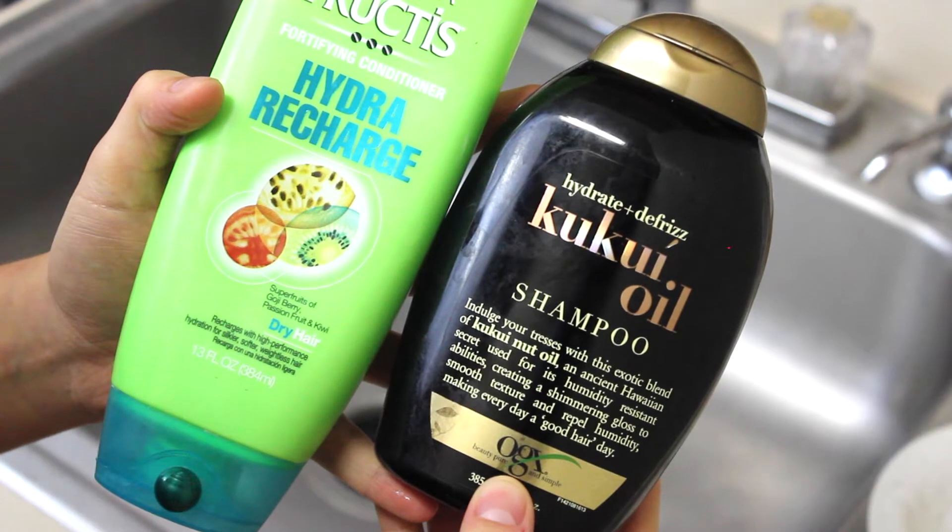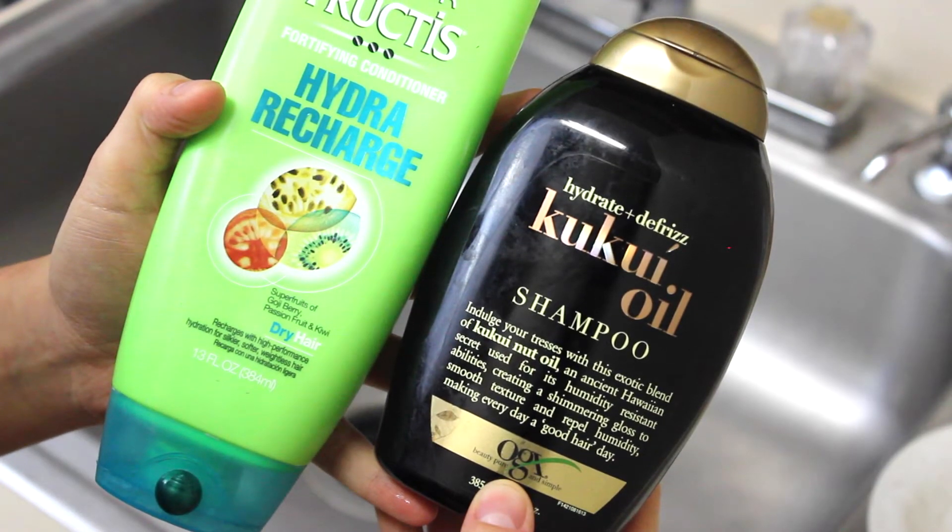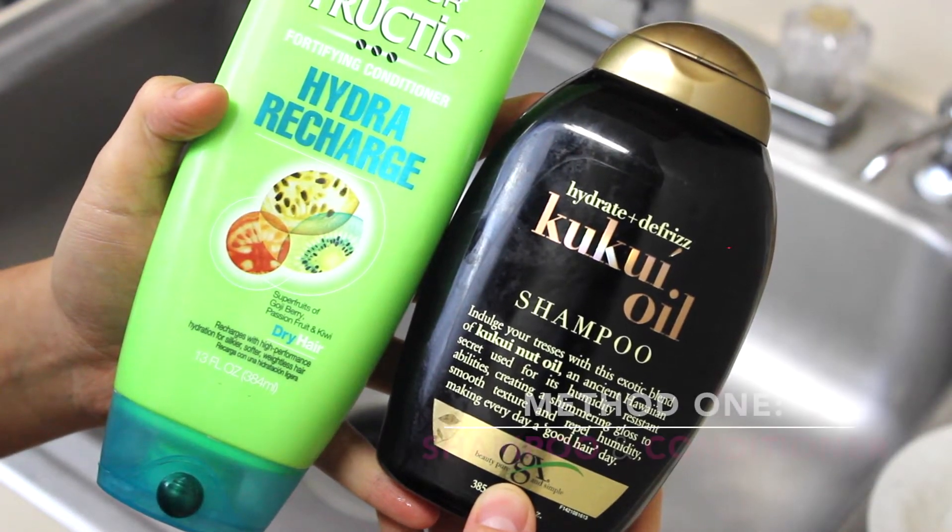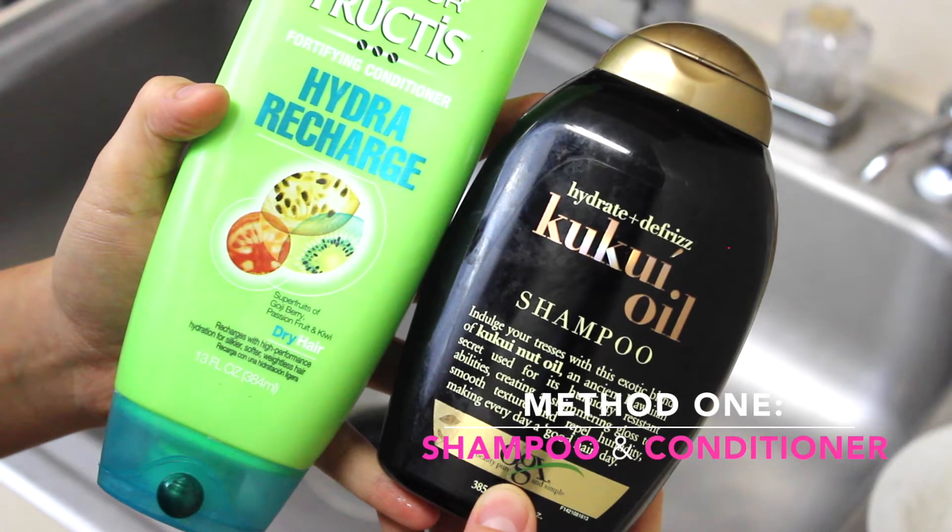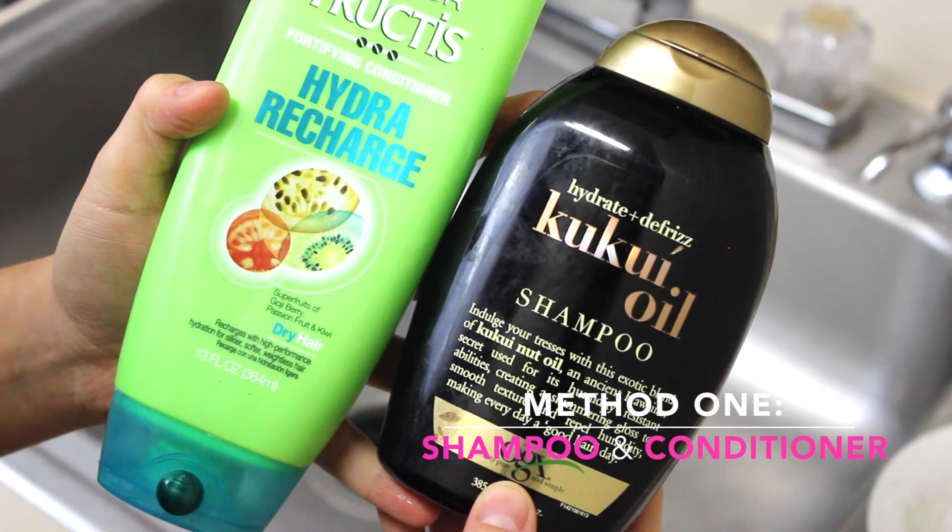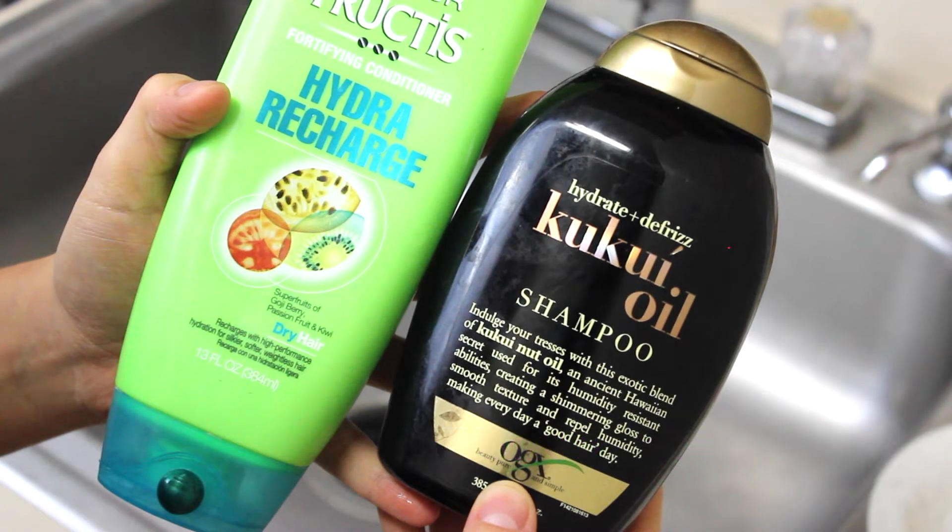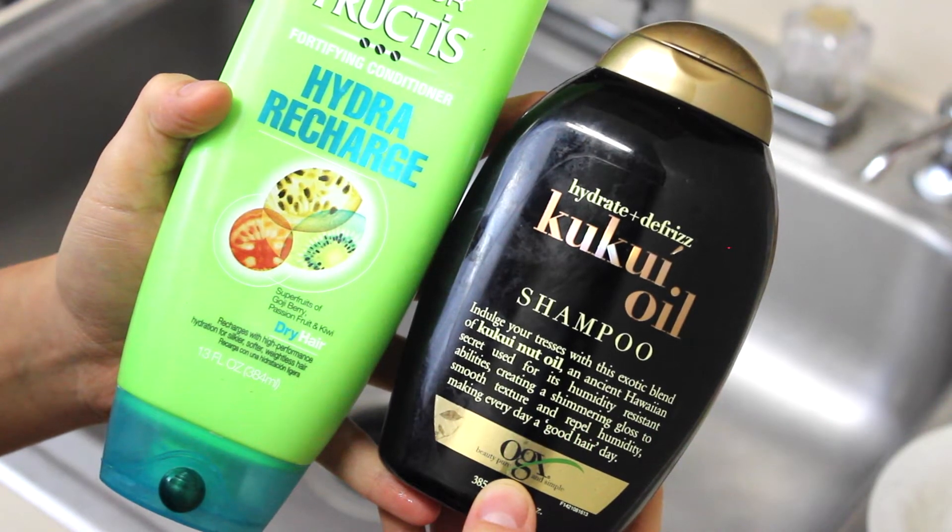In today's video I'm going to be showing you how to wash your brushes along with four methods that you could use to clean your brushes. First method is shampoo and conditioner. Shampoo will strip off all the oil and bacteria while the conditioner restores the moisture your brushes need to maintain their performance.